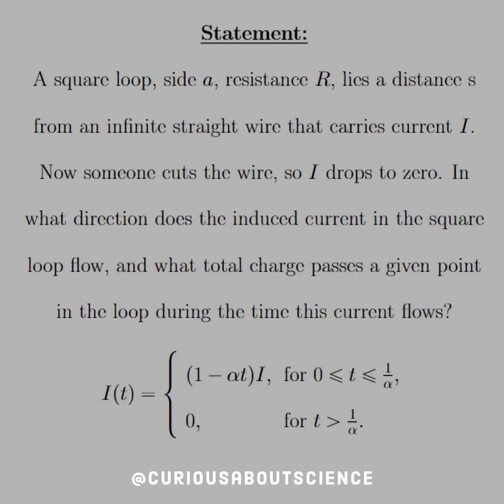Keeping in line with electromagnetic induction, we have a pretty fun question. The statement reads: a square loop, side length A, and total resistance R lies a distance S from an infinite straight wire that carries current I. Now, someone cuts the wire, so I drops to zero. In what direction does this induced current in this square loop flow? And what total charge passes a given point in the loop during the time that the current flows?